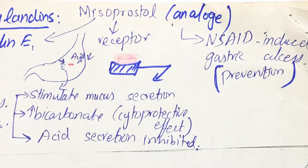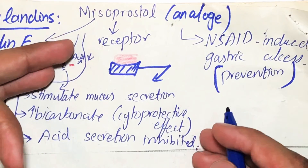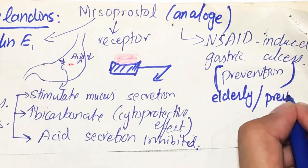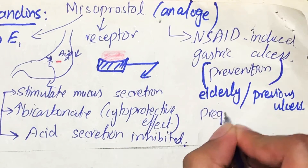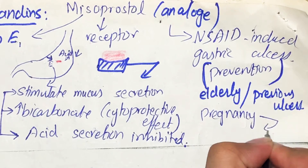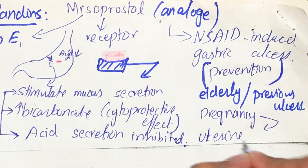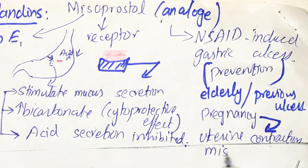In such a case we have to give a preventive measure to that patient — we can prescribe misoprostol to elderly patients or patients having a previous history of peptic ulcer. One thing to remember: misoprostol is contraindicated in pregnancy, because misoprostol can cause uterine contractions, which can cause premature labor, and it can also cause miscarriage.